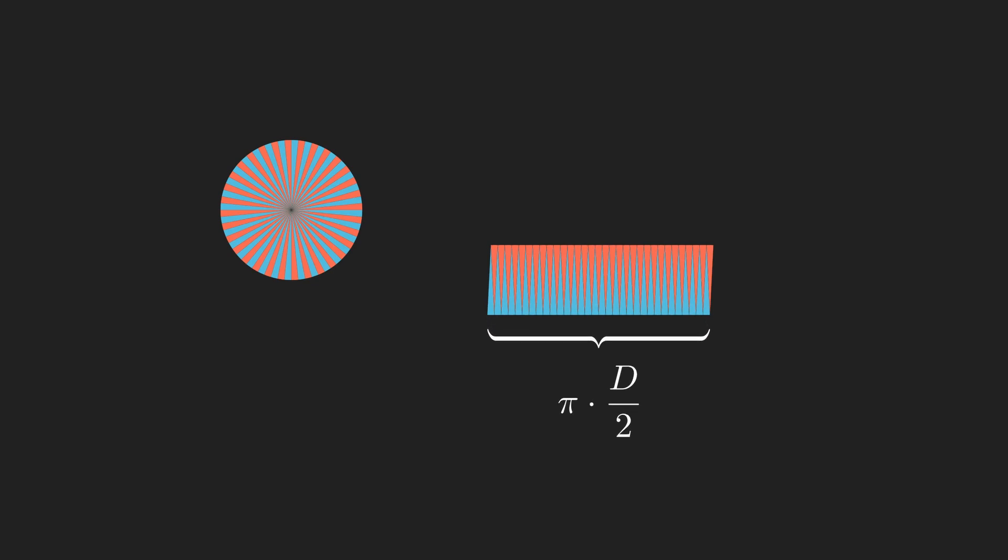Since the diameter is twice the radius, then the bottom of our rectangle is equal to pi times the radius, r. The height of our rectangle is equal to the height of our sections, or simply the radius of our circle. So then, the area of our circle is pi times r times r, or pi r squared.